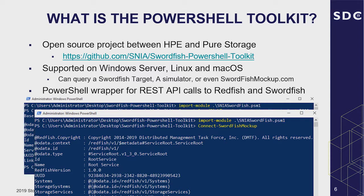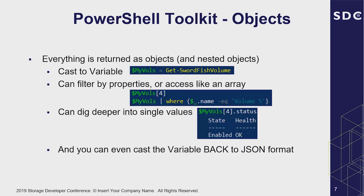This different connection type lets you test without even having to run an emulator locally. Normally if you want to run the PowerShell toolkit to connect to Swordfish, you need a Swordfish target. But this lets you connect right to the website and set up absolutely zero infrastructure to start working on this. Everything is returned as objects — nested objects — and you can very easily cast them into variables.